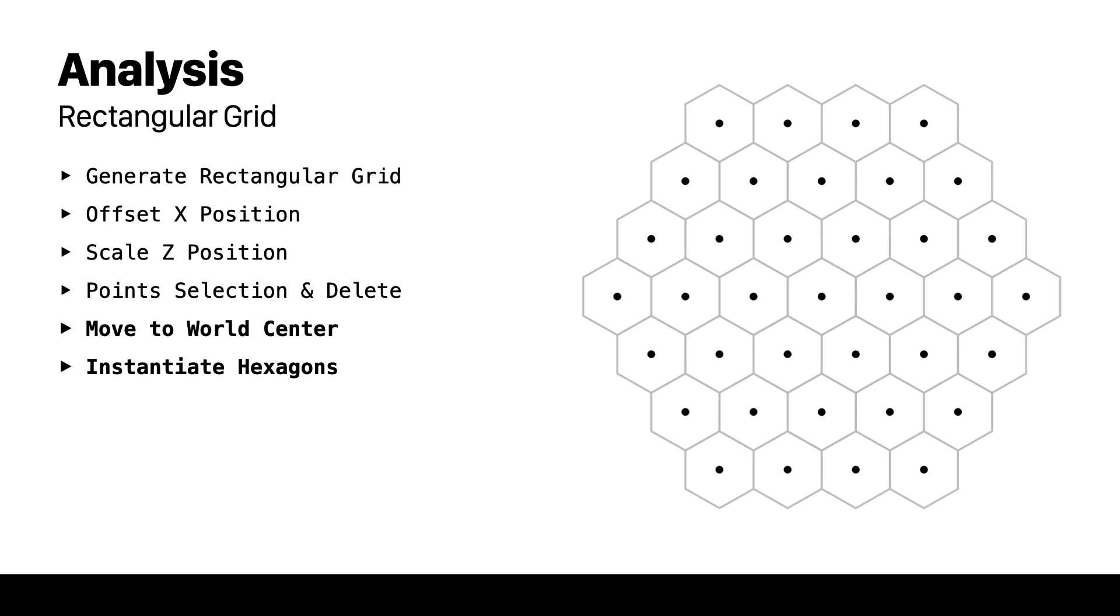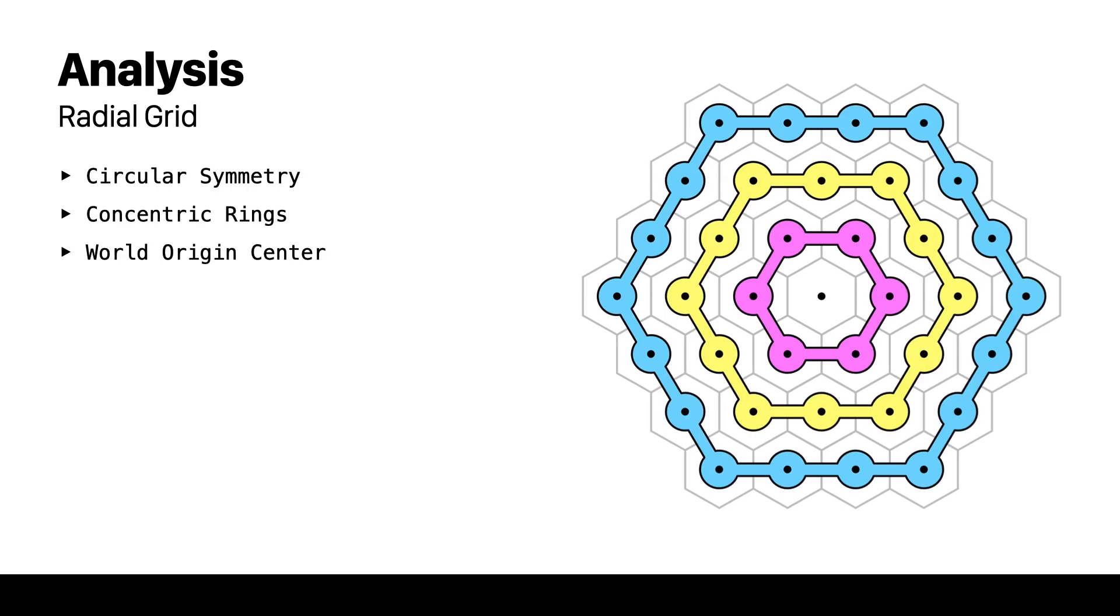Besides the performance, by generating points in this way we don't get to have circular symmetry when generating the points and the attributes that come out of it. That's when I thought that there should be a more sophisticated way of generating hexagonal grid without having to create unwanted points to delete.